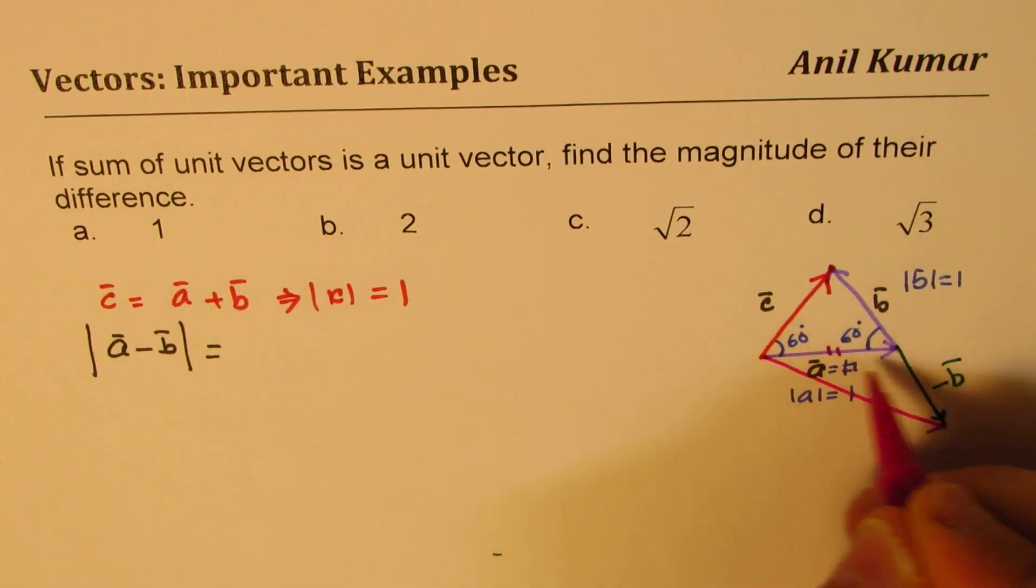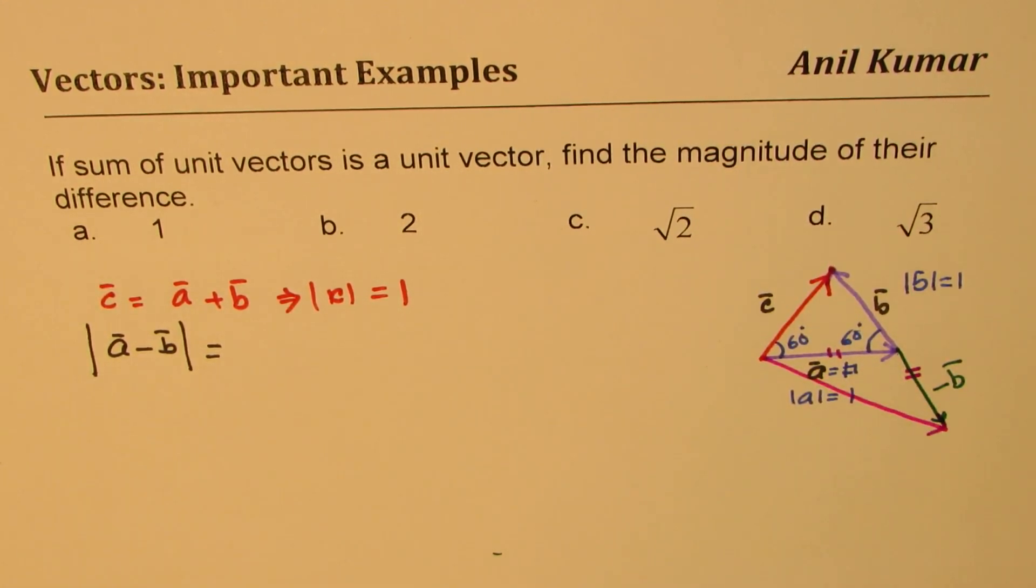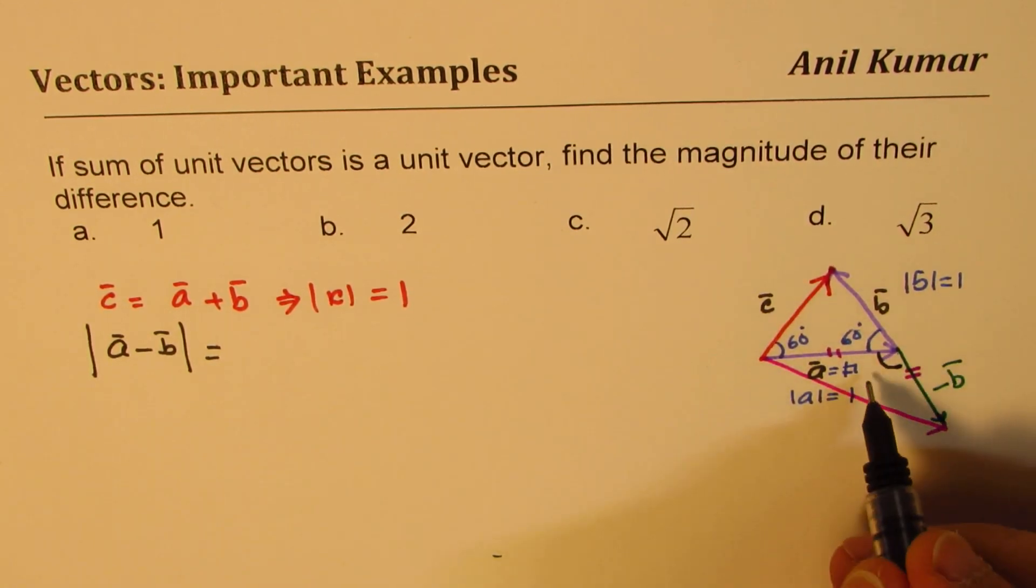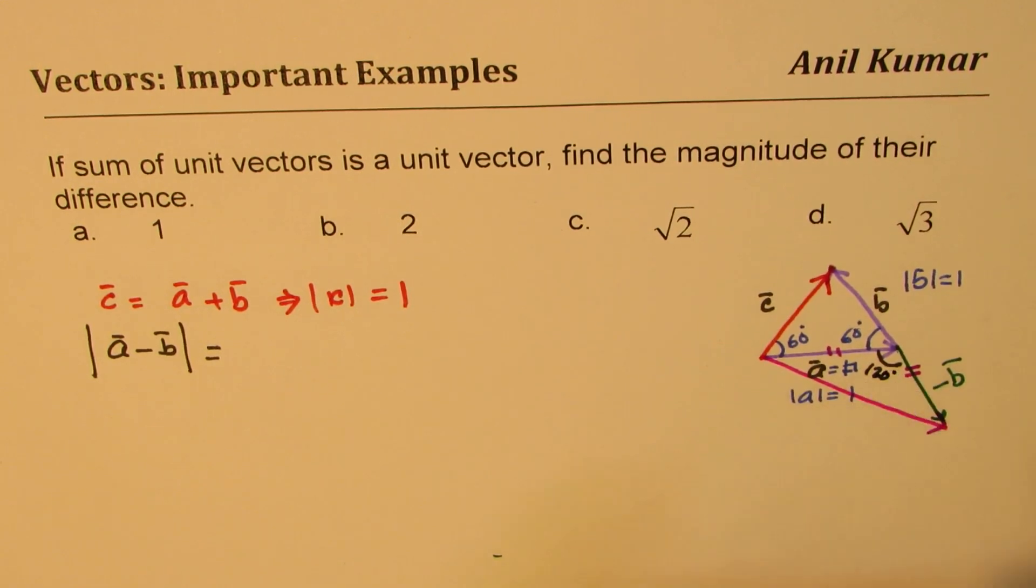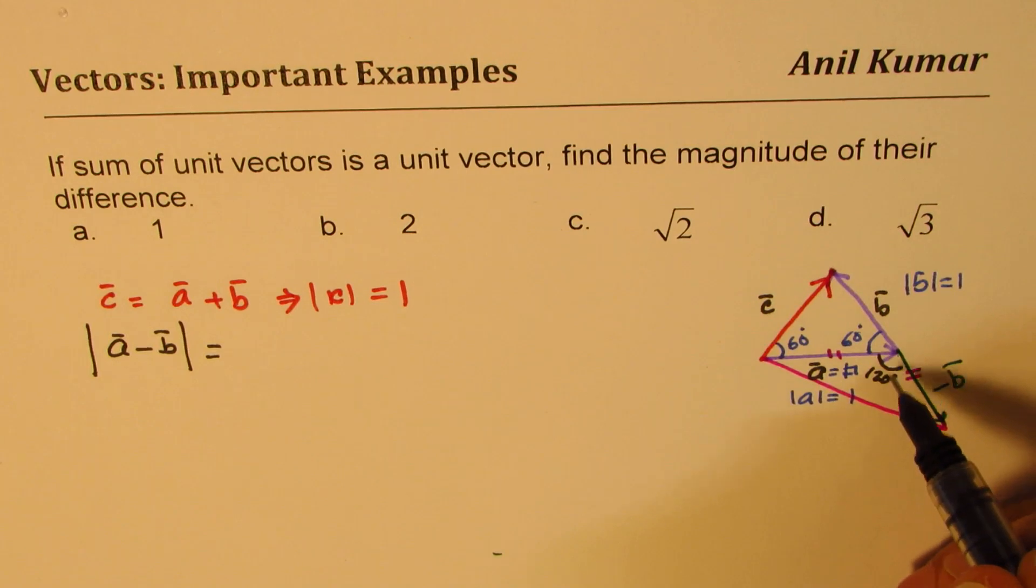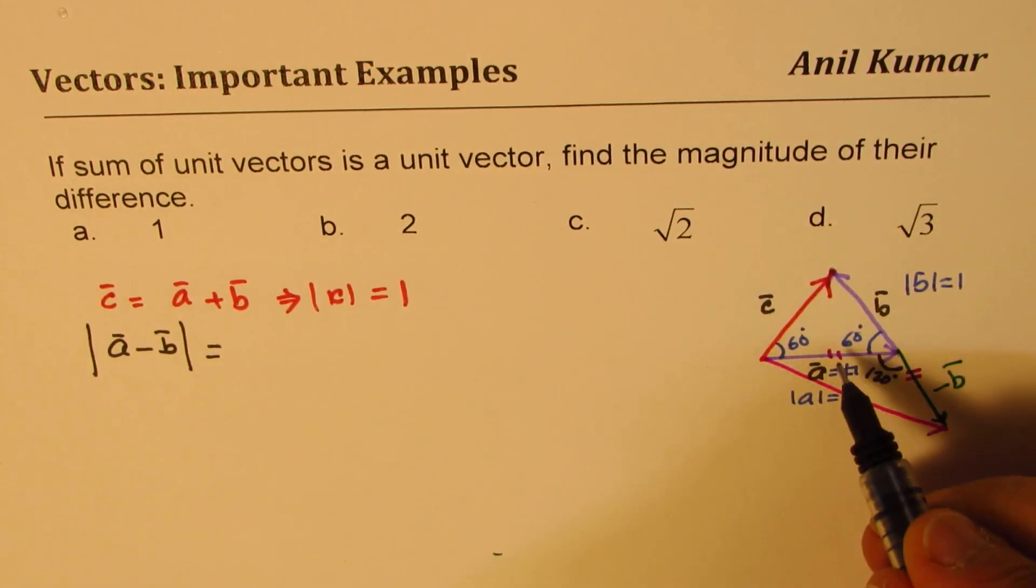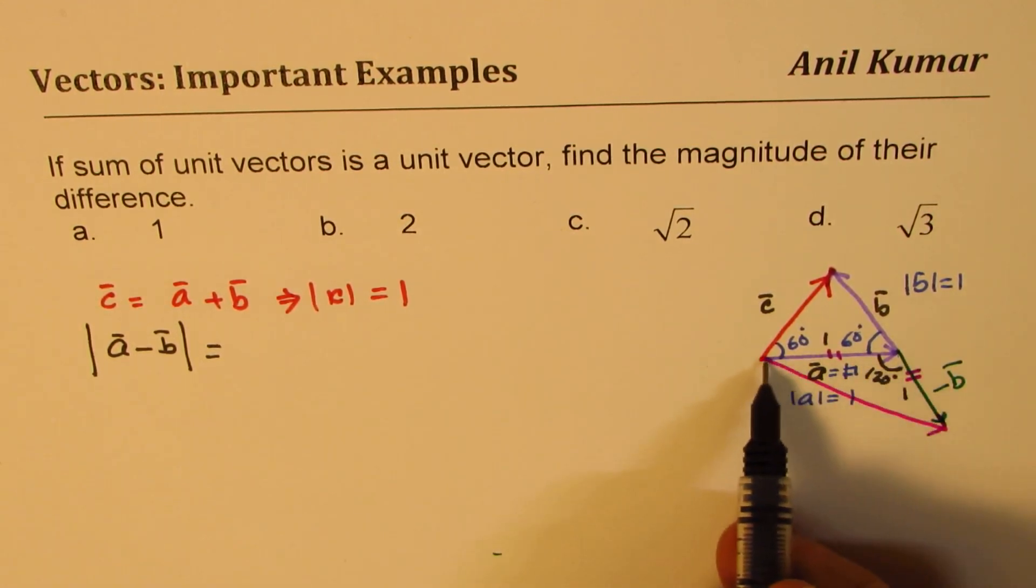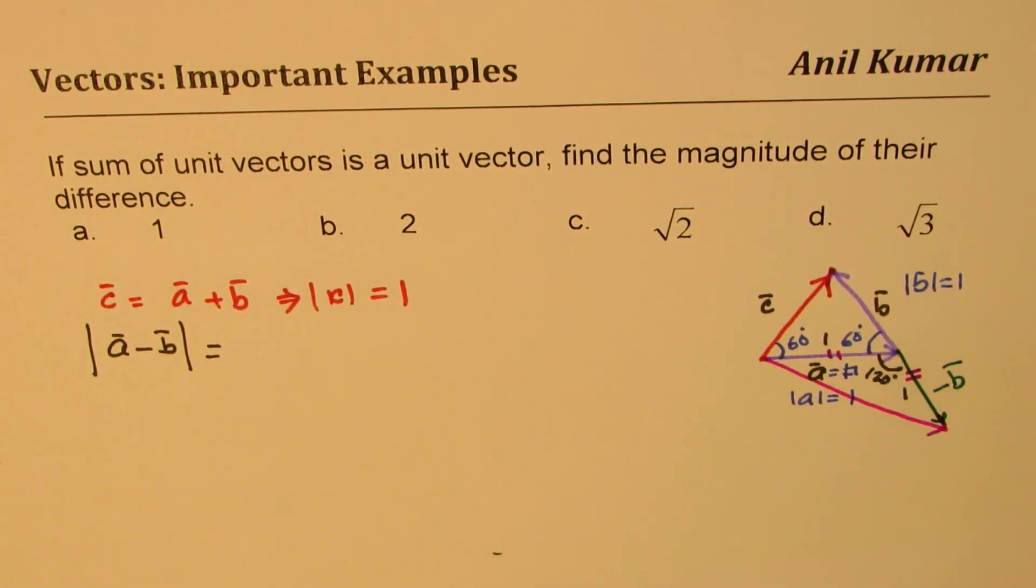Now here we have an isosceles triangle. Where angle at this point will be how much? Well, this is a straight line. So this angle is 120 degrees. So that angle becomes 60 plus 120 gives you 180. And we know these sides are 1, 1. And now we can use cosine law to find the magnitude of this.